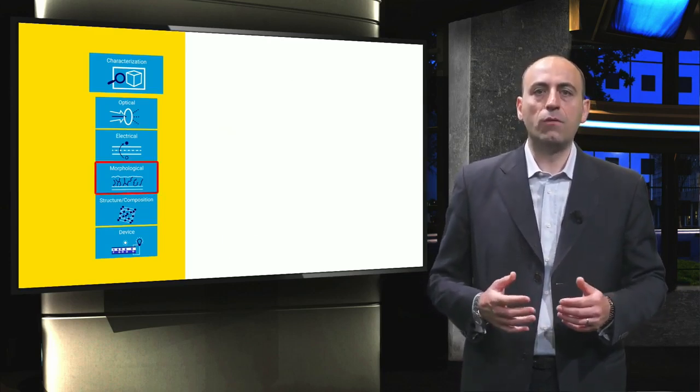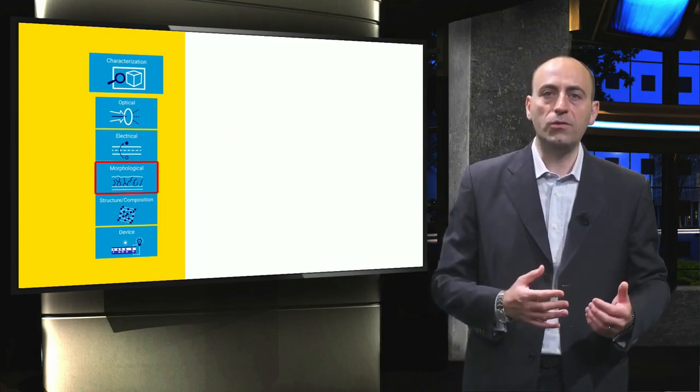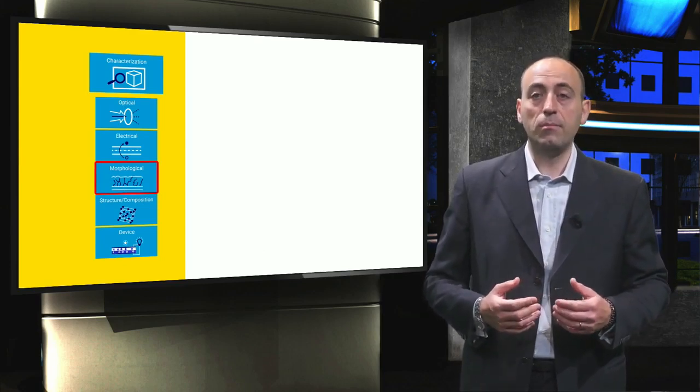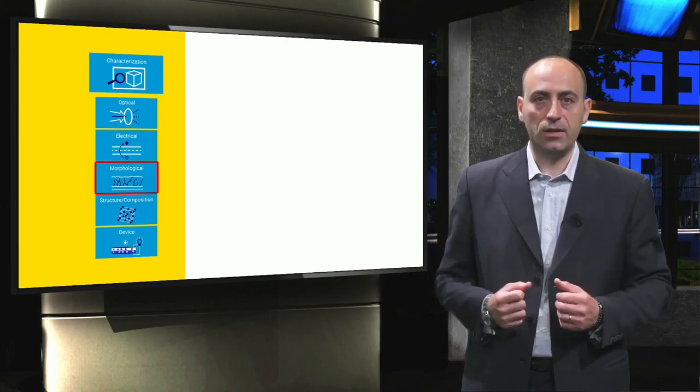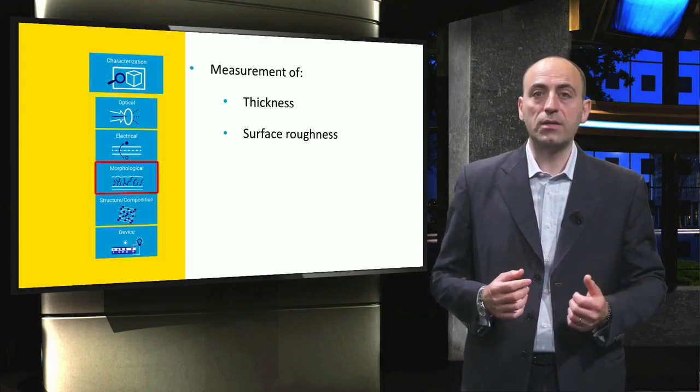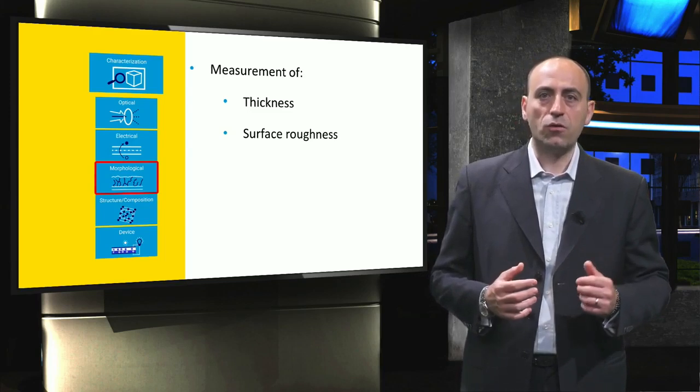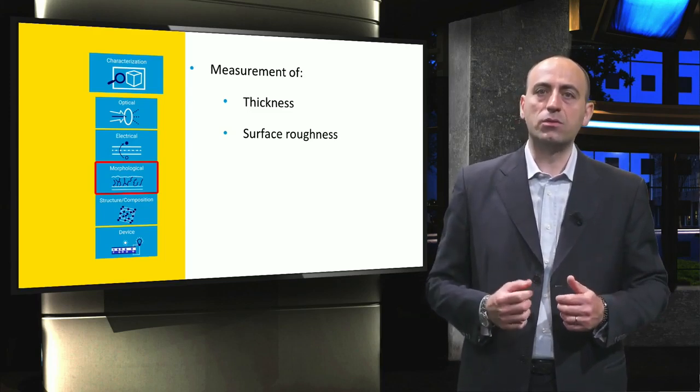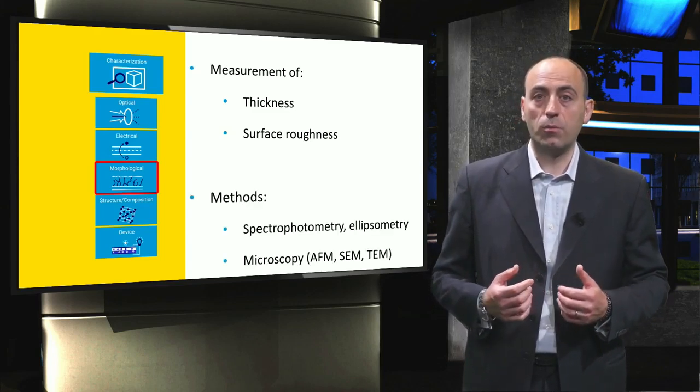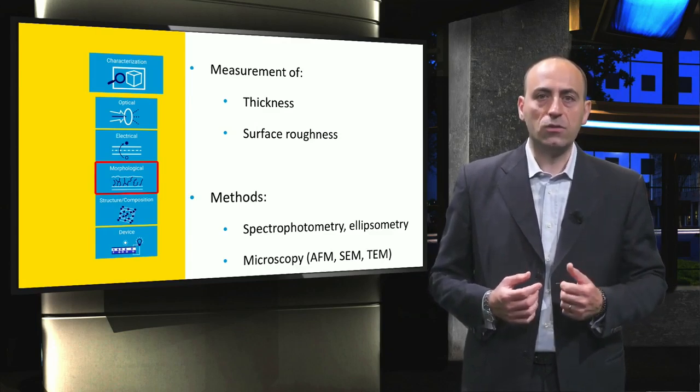The characterization of the morphology of layers and solar cells is carried out to obtain information on the geometry of a photovoltaic device. These are useful to correctly build up models in both optical and electrical simulations. The most important parameters are the thickness and the surface roughness of layers and solar cells. As already mentioned, spectrophotometry and ellipsometry can be used to determine these two aspects. Other methods include different types of microscopy, like atomic force, scanning electron and tunneling electron microscopy.